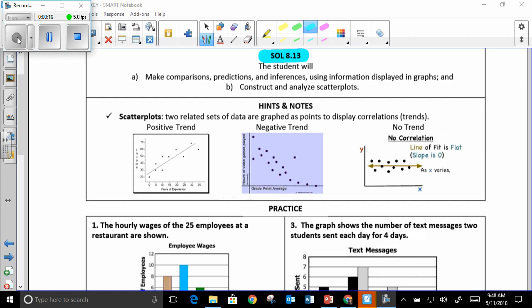Today's SOL is 8.13. We're going to be talking about graphs and scatter plots. Scatter plots, as you know, we did an activity with measuring our arm span and height. A positive trend is when one increases, the other increases. A negative trend, you have one increasing and one decreasing. And no correlation or no trend is where the points on the graph are scattered.